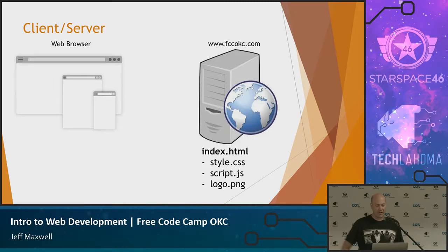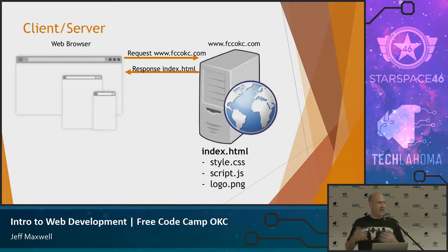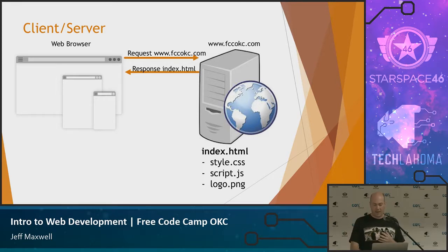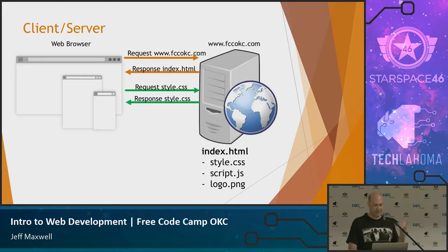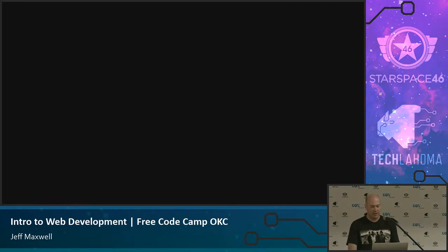In the client-server model, we have a server out here. This is the website for the Free Code Camp OKC. Let's say there's an HTML page, a cascading style sheet, a JavaScript file, and an image. The client makes a call to the server saying, give me this page. It'll respond back with the HTML — the start of every request is going to bring back an HTML page, which is the structure. Then the client says, oh, there's a stylesheet on this page — go get that. The server brings that back. Then go get the script. Go get the image. It goes back and forth to get you the information you need to build out that page.